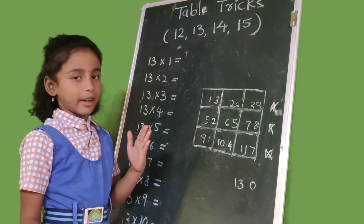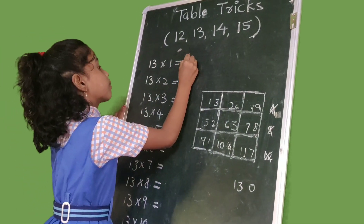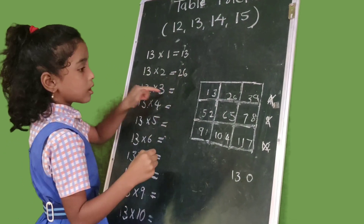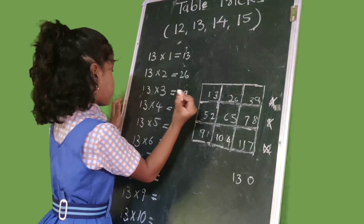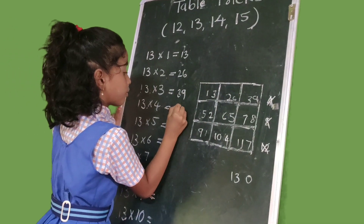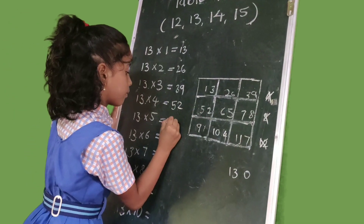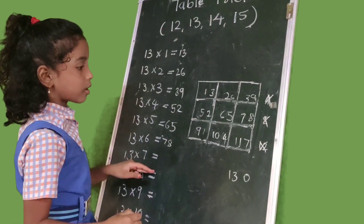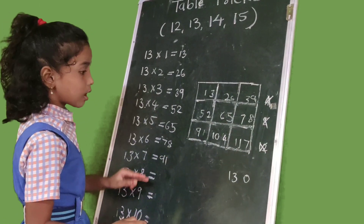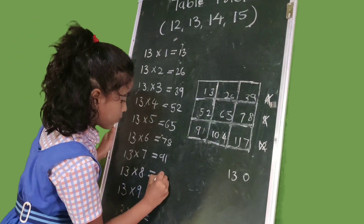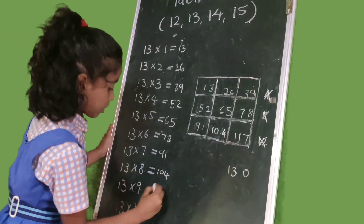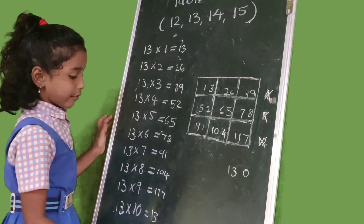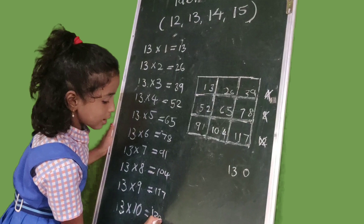Friends, this is the 13 table trick. Now we write 13 tables: 13×1=13, 13×2=26, 13×3=39, 13×4=52, 13×5=65, 13×6=78, 13×7=91, 13×8=104, 13×9=117, 13×10=130. Friends, this is the 13 table trick.